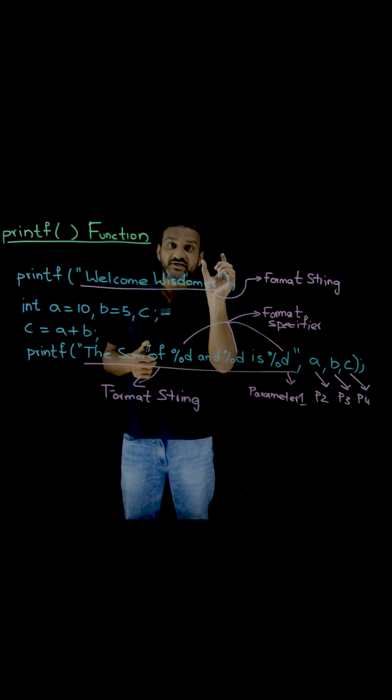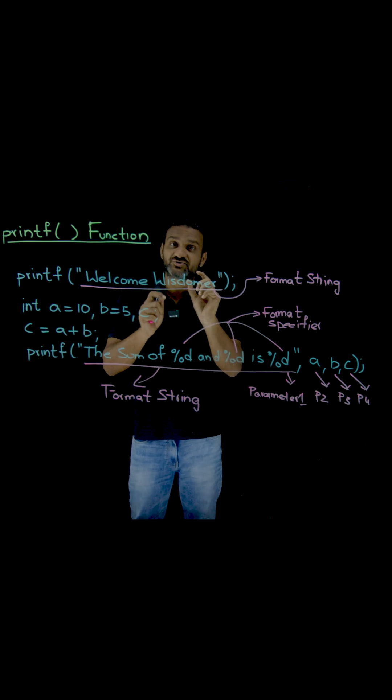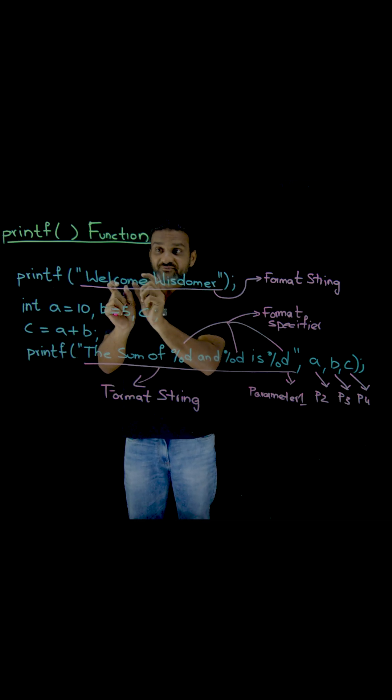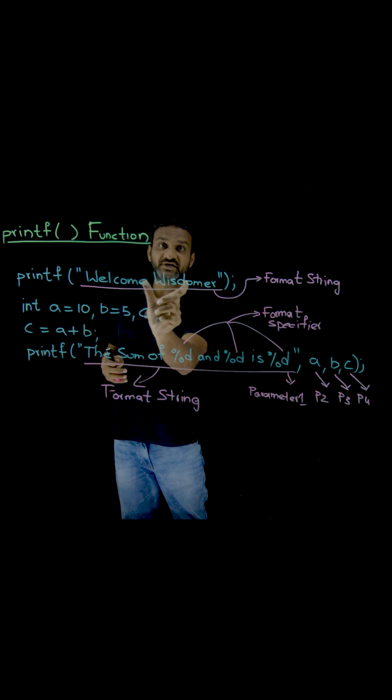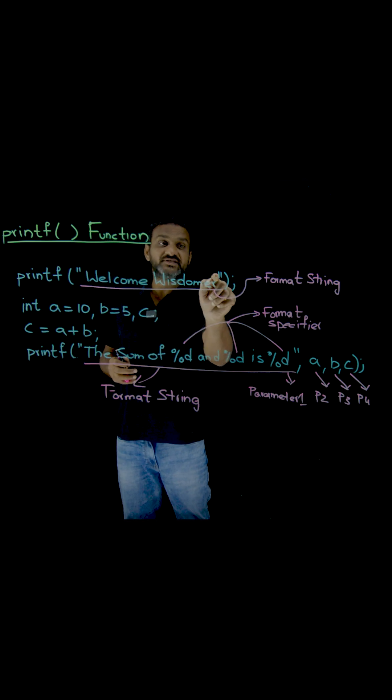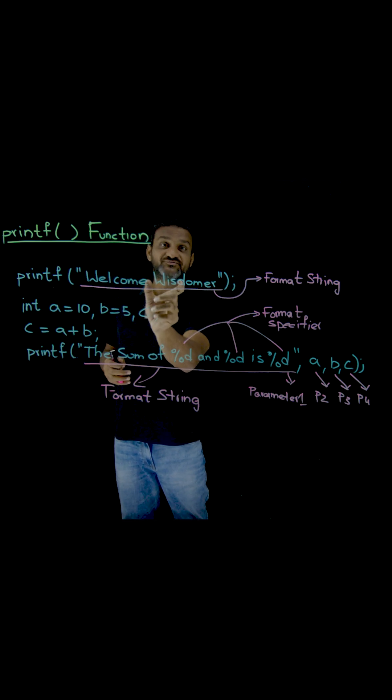Every printf function has parameters. The first parameter in the printf function is enclosed in double quotes. It is what we call a format string.